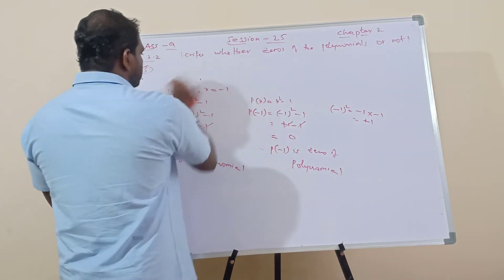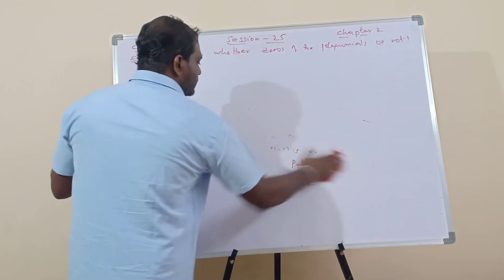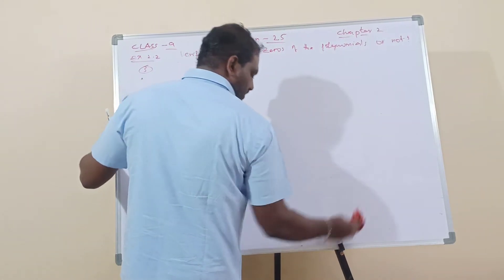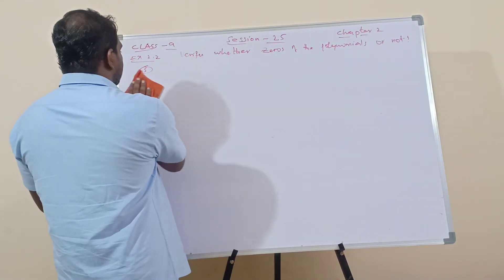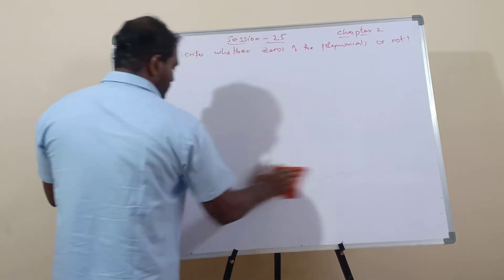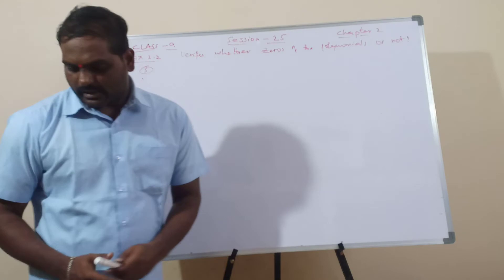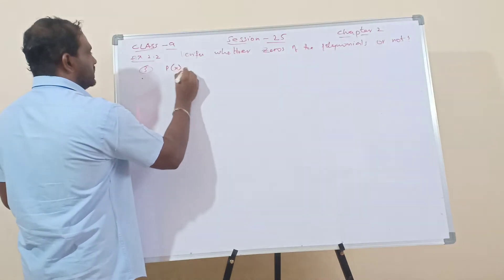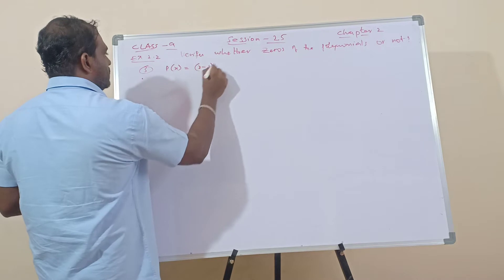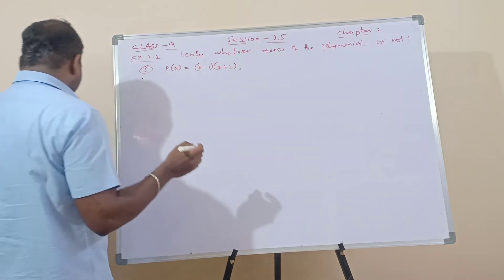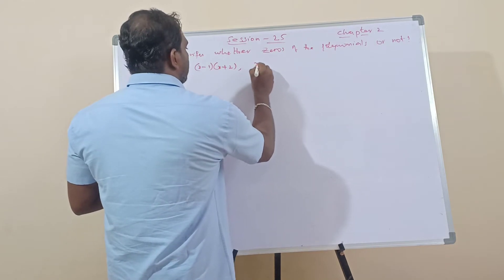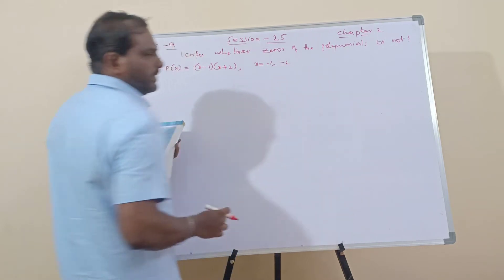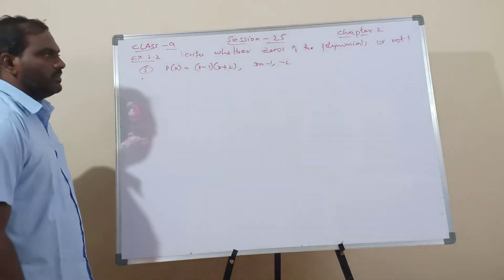Next I will go for question number 4. The polynomial is p of x equals x minus 1 into x plus 2. We have to check whether x equals minus 1 and x equals minus 2 are the zeros of the polynomial or not.